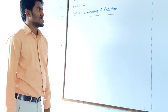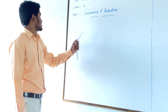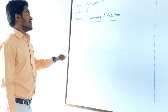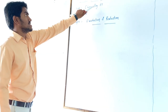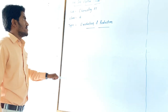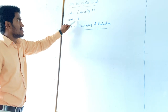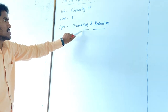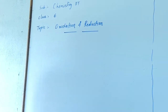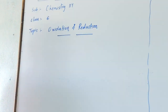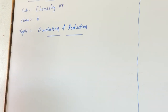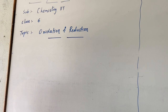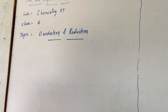Good morning all of you. Welcome to 3 Saiyajaya School. I am dealing with the IIT chemistry for class 6. The chapter name is Oxidation and Reduction. In the previous classes we have discussed the basic terms related to the chapter.